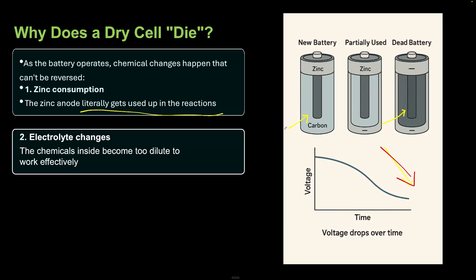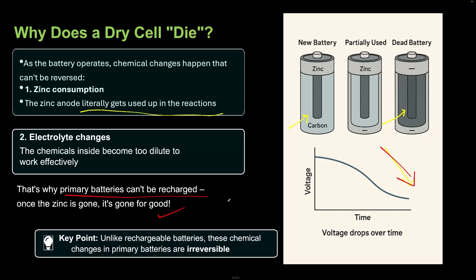Electrolyte changes also happen. The chemicals become too dilute to work effectively. That's why primary batteries can't be recharged. Once the zinc is gone, it's gone for good. It's like burning paper—it turns into ash, smell, and fire. You cannot reverse it back. Certain changes cannot be reversed. Unlike rechargeable batteries, these chemical changes are irreversible.